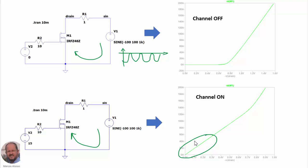Now we can compare the behavior of a Schottky diode with our MOSFET transistor operating as a synchronous rectifier. Here we have selected a Schottky diode from LTSpice with a 30-volt rating and 20 amperes. We can see that when the diode is handling 20 amperes, the voltage across the diode is going to be something like 0.53 volts, so the total losses will be 10.6 watts. If we compare this with the characteristics of our transistor, for the same current, the voltage across the switch is going to be only 0.11 volts, so the losses will be 2.2 watts compared with 10.6 watts — almost five times lower with the transistor than with the diode.